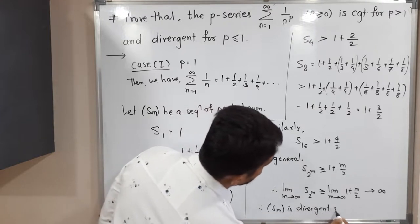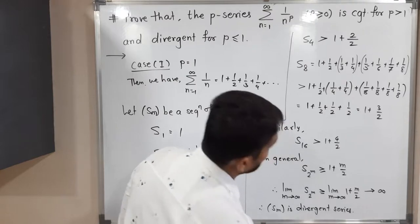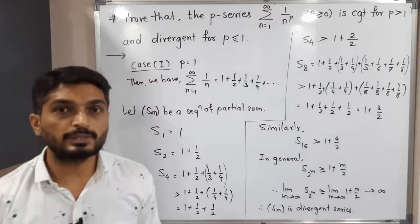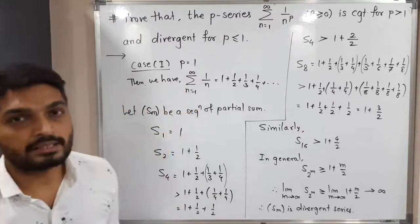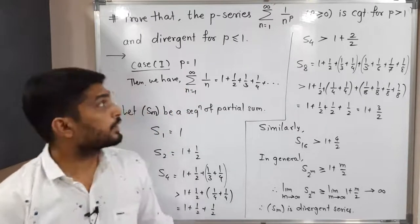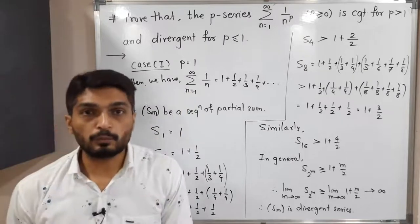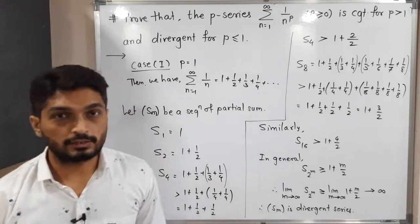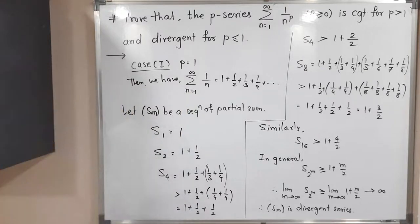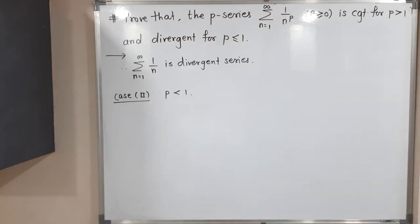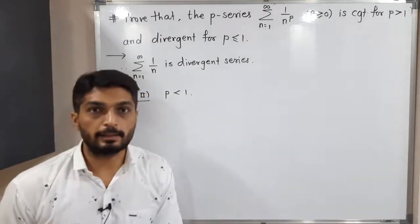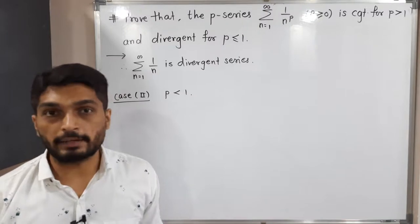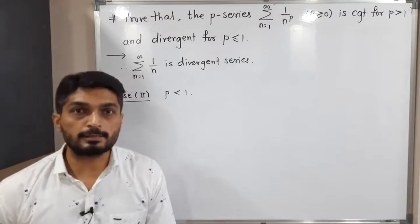Since S_{2^m} tends to infinity, the sequence of partial sums is divergent. Therefore, the series summation 1/n is a divergent series. Conclusion: for p equal to 1, the p-series is divergent.